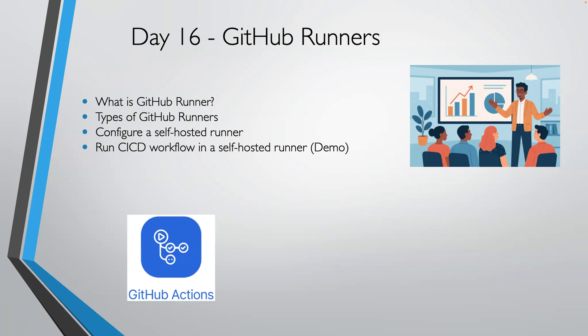Hello everyone, welcome back to day 16 lecture of how to learn DevOps and cloud computing in 60 days. As part of today's lecture, we are going to learn about GitHub Runners, understand the different types, configure a self-hosted runner in AWS Cloud, and run our CI/CD pipeline on that self-hosted runner. Let's get started.